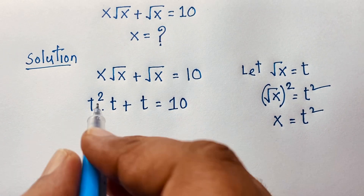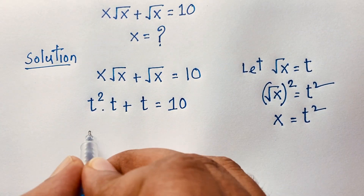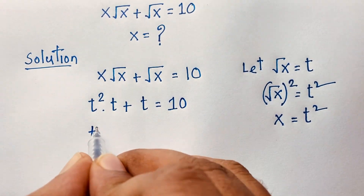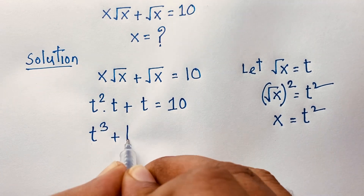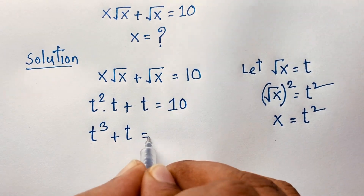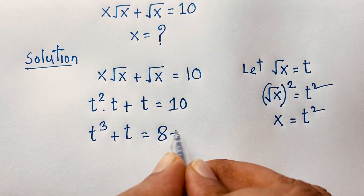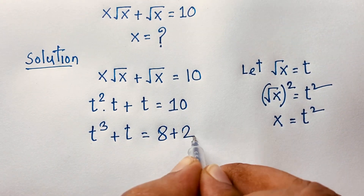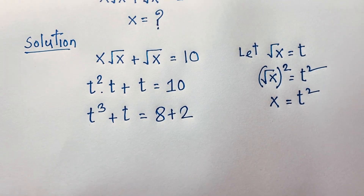Now t squared times t gives t cubed, so the equation becomes t cubed plus t equals 10. We can note that 10 equals 8 plus 2.